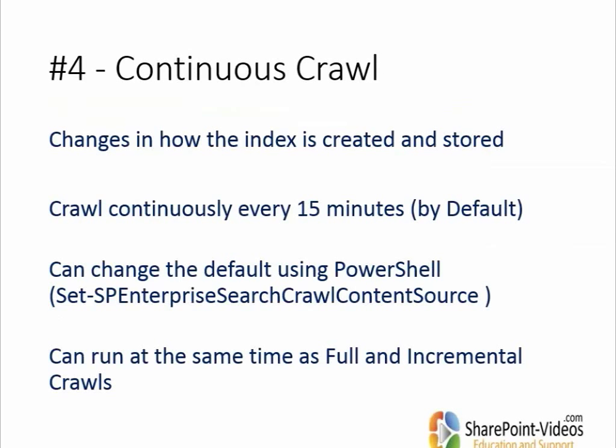As I have mentioned, in the case of a full crawl and incremental crawl, the crawler goes to the content source and picks up the list of items first. This list is usually huge — it can be tens of thousands of items, so it takes time. One important thing to know about full and incremental crawls is that they cannot be overlapped.